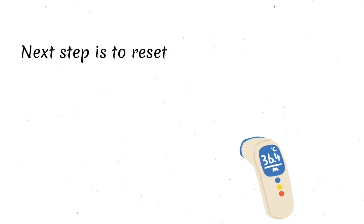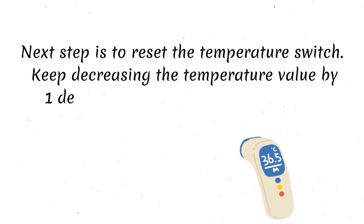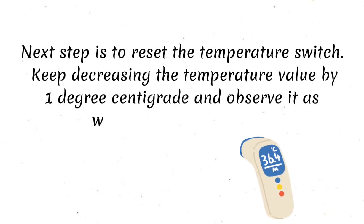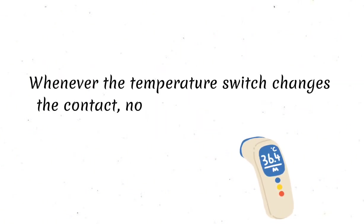Next step is to reset the temperature switch. Keep decreasing the temperature value by 1 degree centigrade and observe it as we did in the increasing way. Whenever the temperature switch changes the contact, note down that temperature.